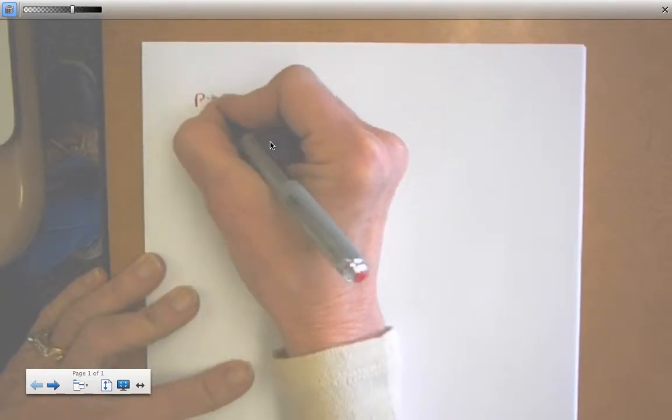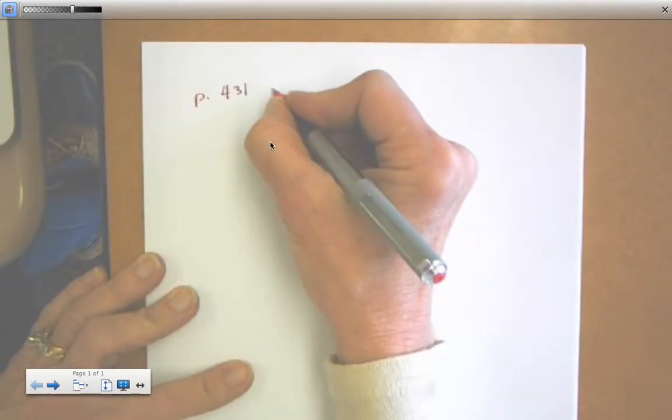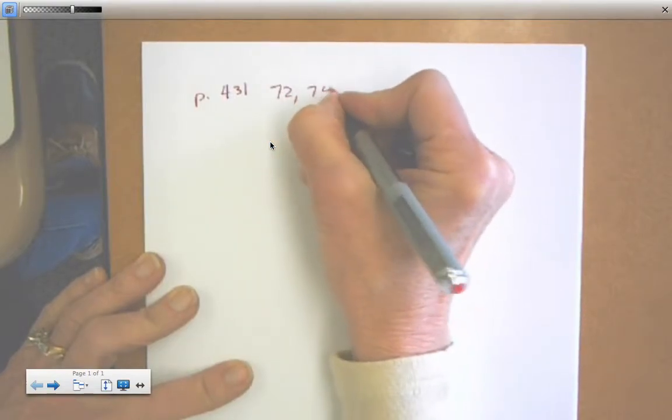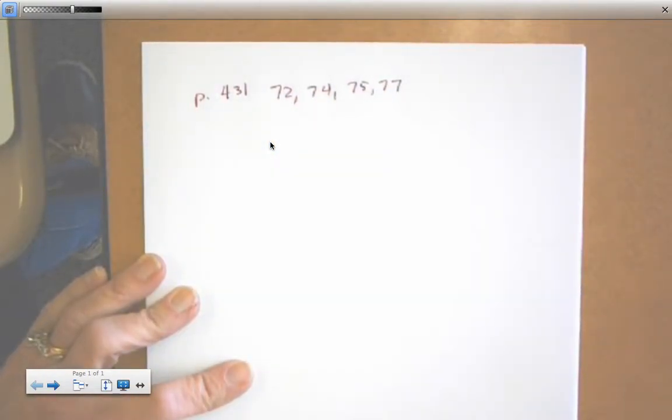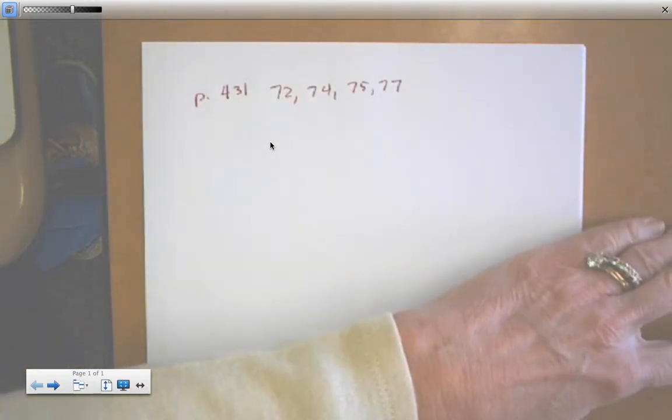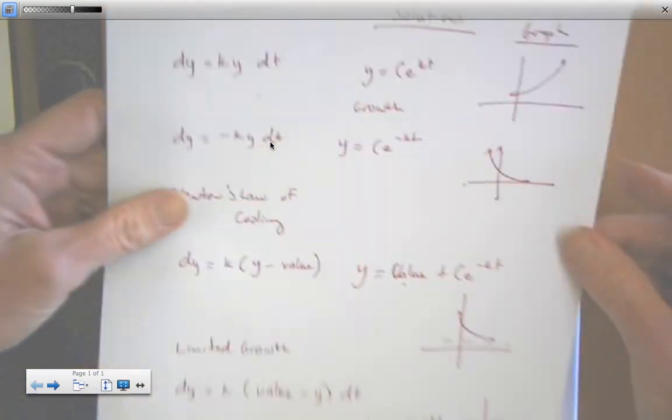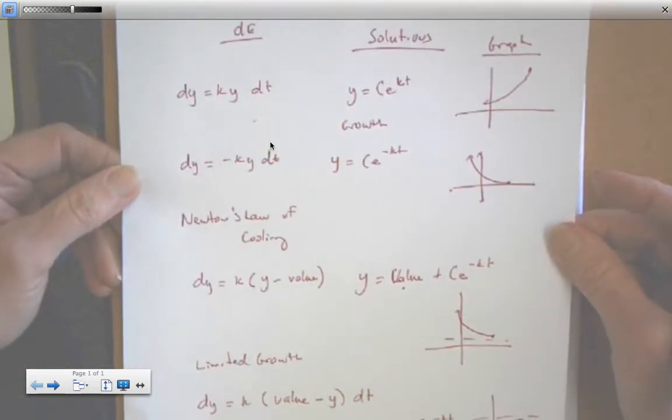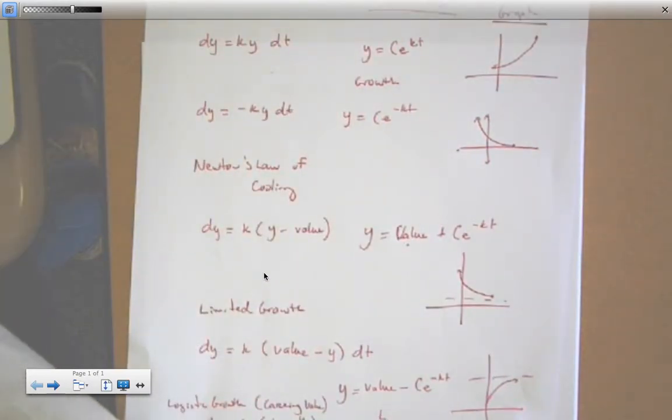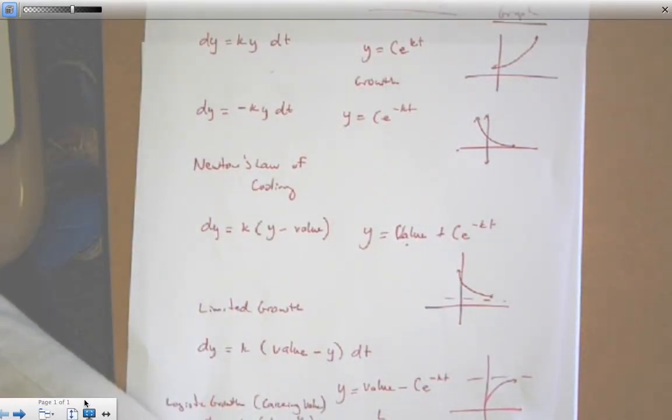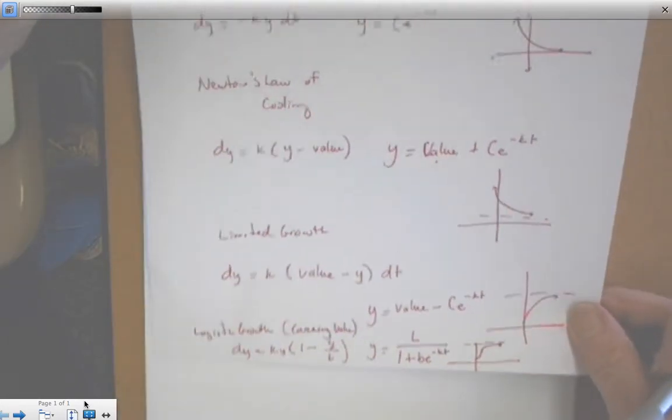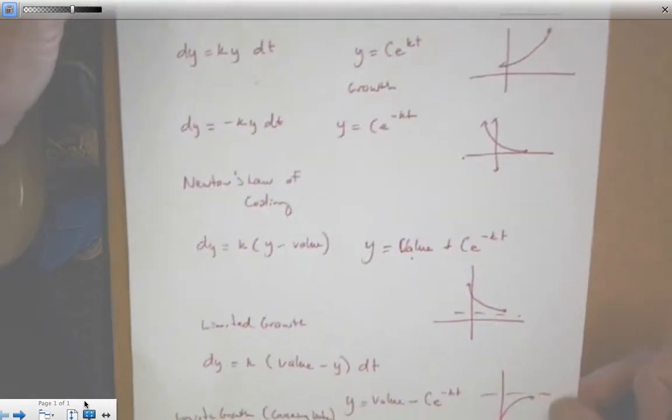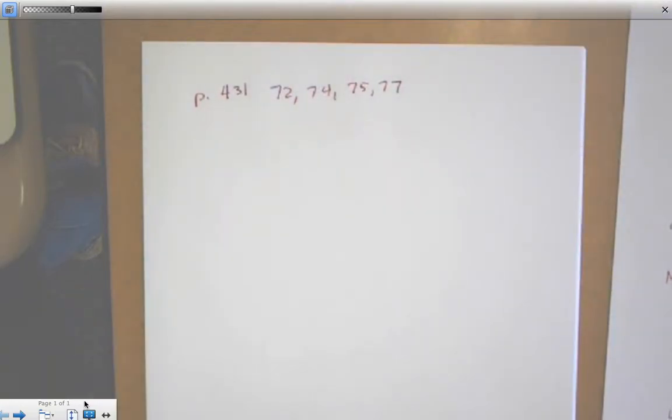We're going to work from page 431, number 72, 74, 75, and 77. And don't forget, have your sheet from our previous video. Have all your models, their differential equations, and what their graphs look like. So it'd be handy if you have this set of notes by you while you were working these problems.